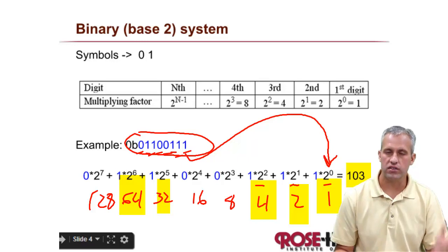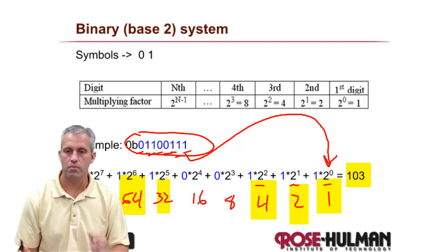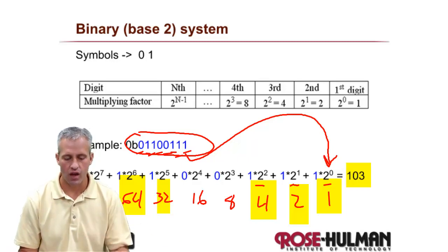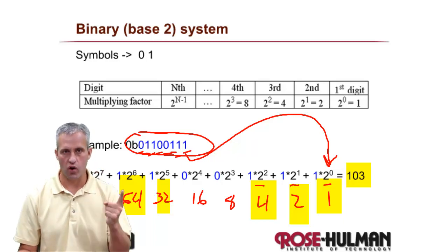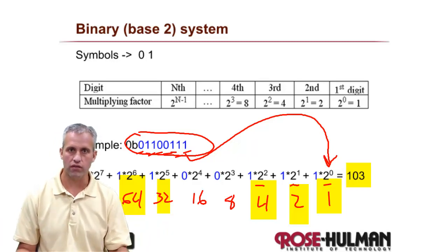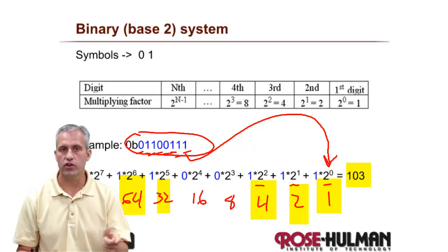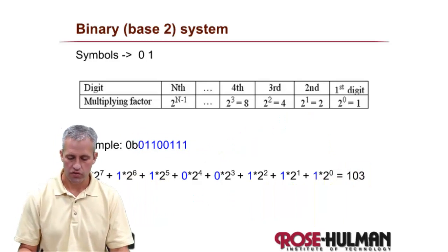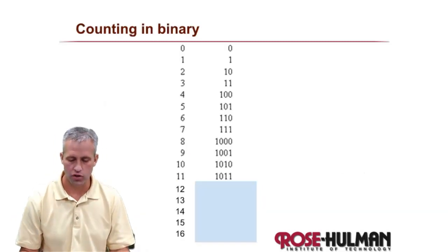The reason binary is so important is that everything on a computer is either a one or a zero. At a low level, the computer doesn't really understand the decimal system at all — it uses ones and zeros for everything. So understanding binary helps you understand any quirks or eccentricities the computer might exhibit.